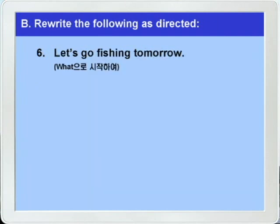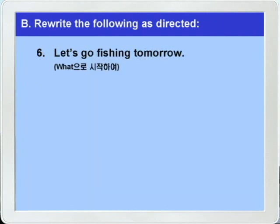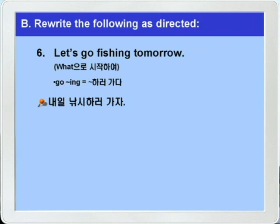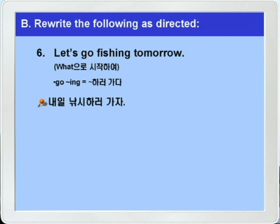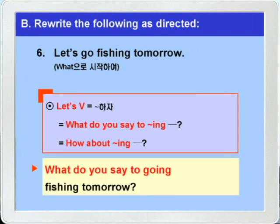다음 6번으로 가시죠. 'Let's go fishing tomorrow.' 'go -ing'가 나왔죠. '뭐뭐 하러 가다' 이런 뜻입니다. 그래서 '내일 낚시하러 가자' 이런 말인데, 이번 문제는 what으로 시작해서 다시 쓰는 문제가 되겠습니다. 'let's 동사원형'은 'what do you say to -ing'나 'how about -ing'로 바꿔 쓸 수 있다 했으니까, 여기서는 'what do you say to -ing'로 바꿔 쓰면 되겠죠. 정답: 'What do you say to going fishing tomorrow?'